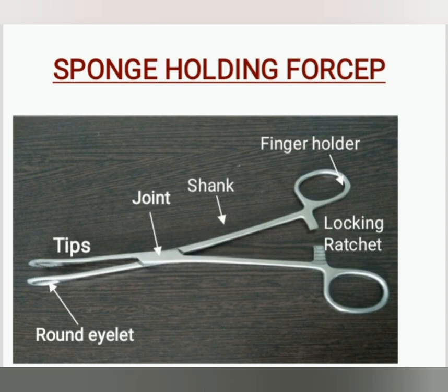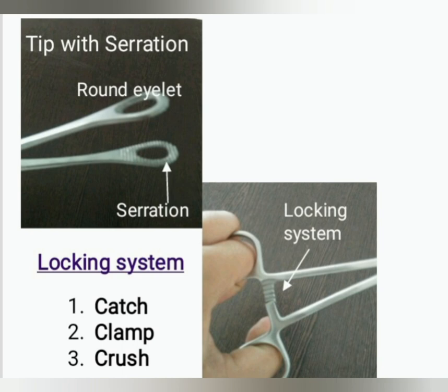Now let's learn about the sponge holding forcep. The sponge holding forcep is a very useful instrument in painting and dressing. The parts of the sponge holding forcep are: finger holder, shank, joint, and tips with round eyelet.